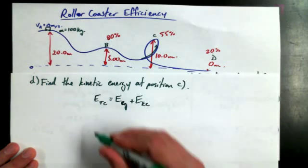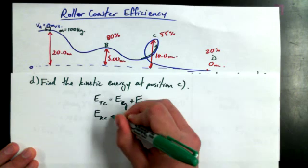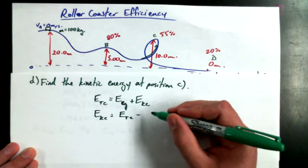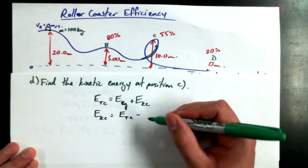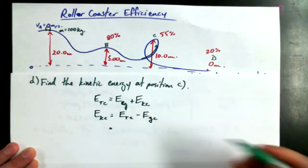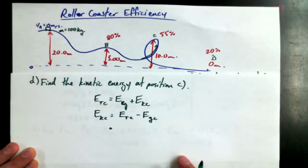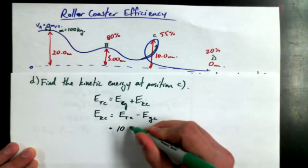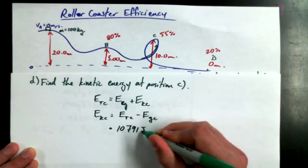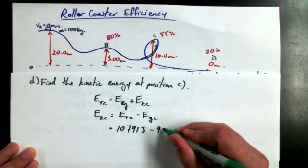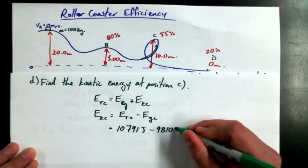So EK at position C is equal to E total at position C, because it's going to be different than at position A because of this whole percentage efficiency thing, minus EG at position C. And we calculated those values previously to be 10,791 joules. Is that right? Yes. And EGC, just a second ago, we calculated to be 9,810 joules.